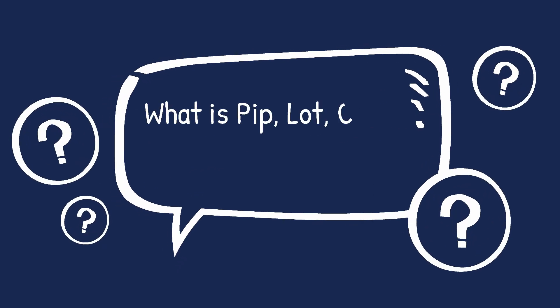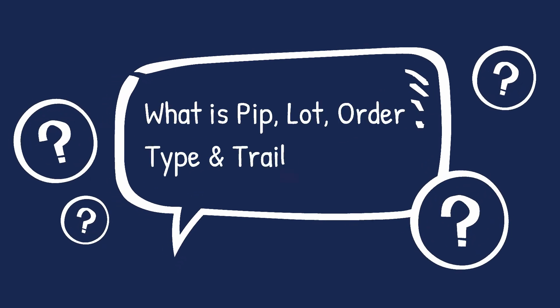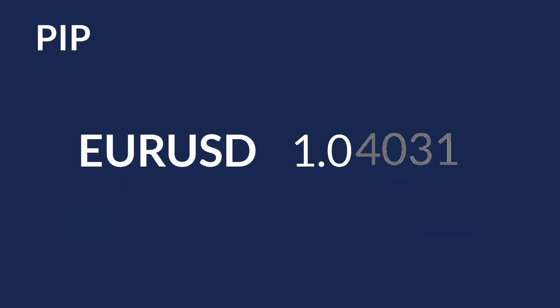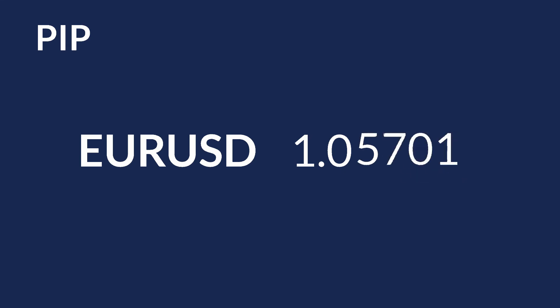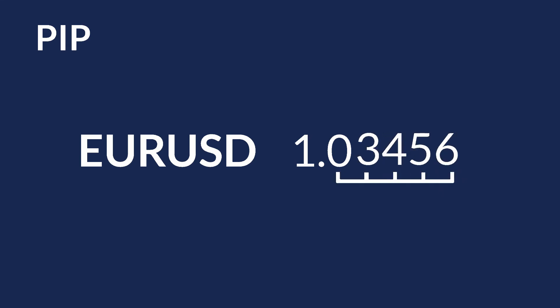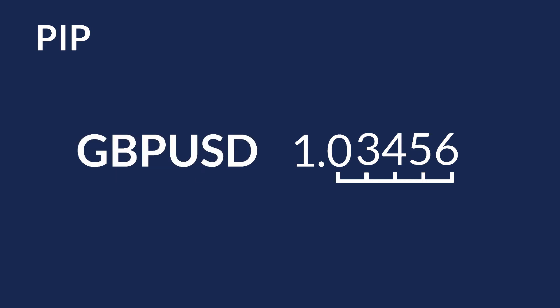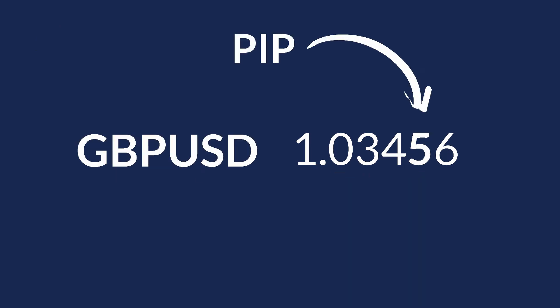A PIP is a measure of the change in the exchange rate of a currency pair. Most currency pairs are in five decimal places, like Euro to US Dollar, British Pound to US Dollar, etc. A PIP corresponds to the fourth decimal digit.